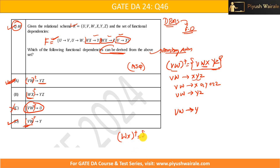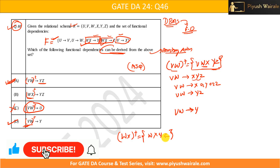For option B, we take the closure of WX. The closure starts with WX itself. From WX we can get Y, and from WX we can also get Z. So the closure of WX contains {W, X, Y, Z}, which means WX → YZ holds. Therefore option B is also correct.